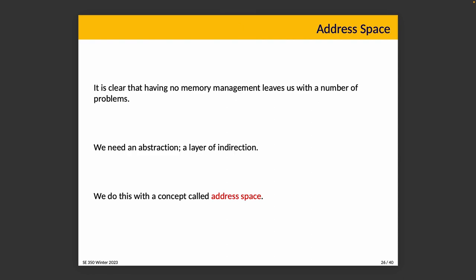We've established that having no memory management system leaves us with a number of problems, so let's try to figure out something realistic. What we're going to look for is an abstraction — a layer of indirection — and our concept for this is an address space.